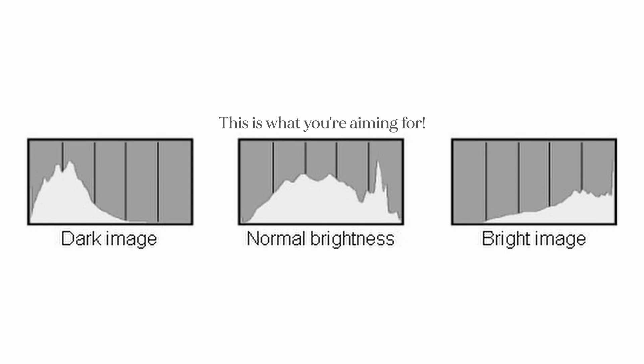I tend to overexpose my shots 1–2 stops so I can reduce noise in the shadows and bring it down in post. I always use the histogram to make sure I'm not blowing out the highlights when possible, and to make sure there's enough detail in the shadows so the footage isn't breaking. You always want enough shadow detail so you can turn it back down during color correction or grading.